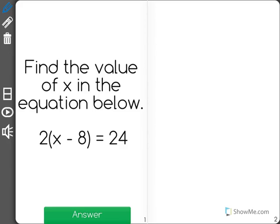Find the value of x in the equation below: 2 times x minus 8 equals 24. Now there are lots of different ways to solve this, and I'm going to go through just three of them.